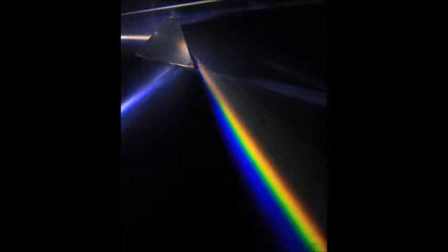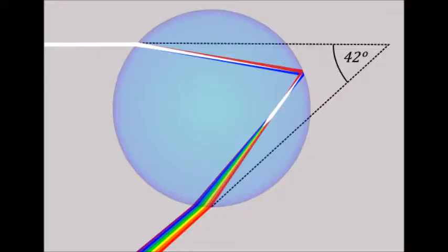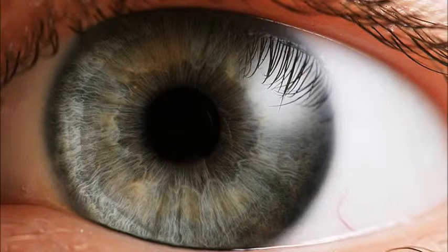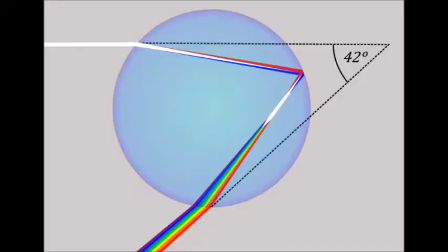Rainbows are formed in a very similar way. In rainbows, individual drops of water act as the prism. Light enters the water and reflects off the back of the drop back into our eyes. When the light first enters the drop, it is diffracted. By the time the light exits the water drop, it is diffracted into an array of colors, with red being the least diffracted, exiting on the bottom, and purple, the most diffracted, exiting at the top.